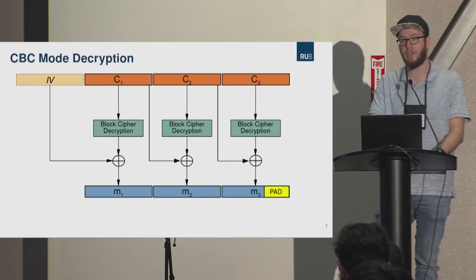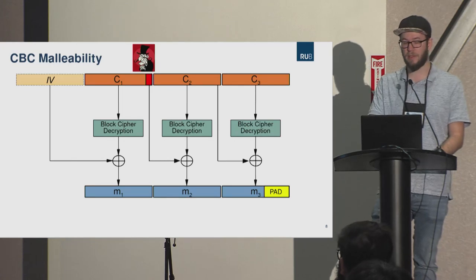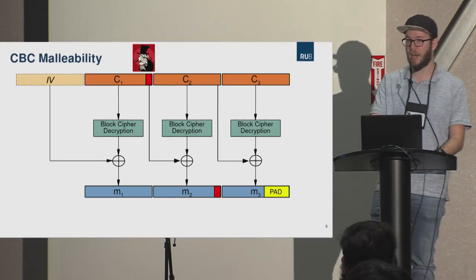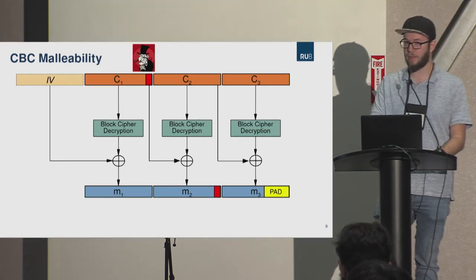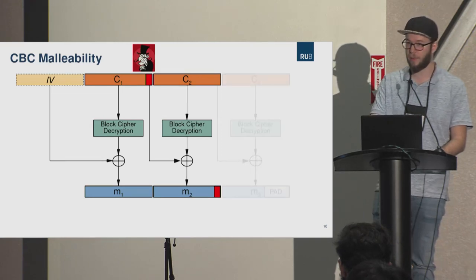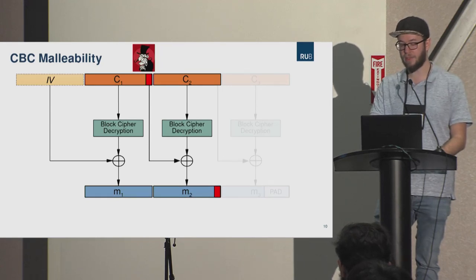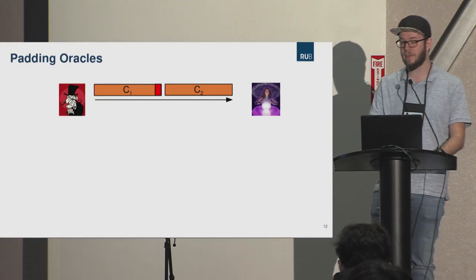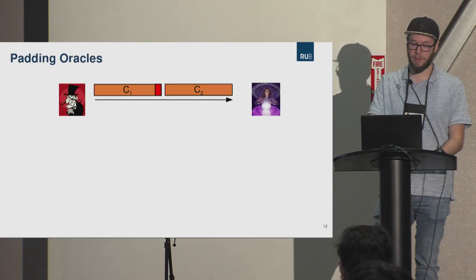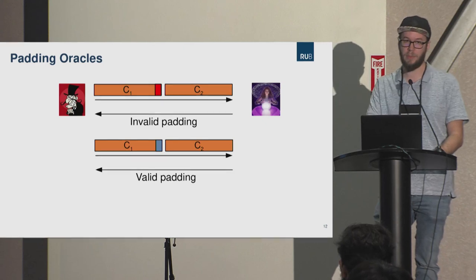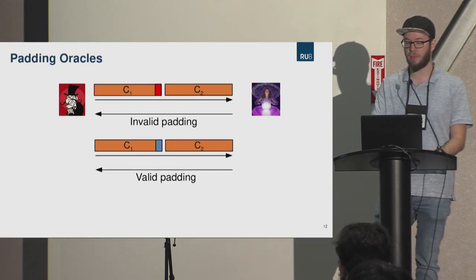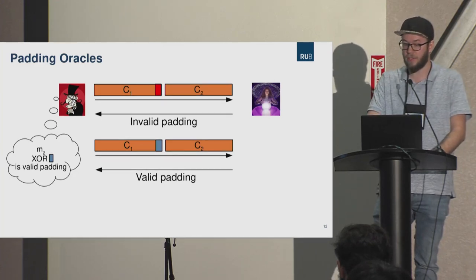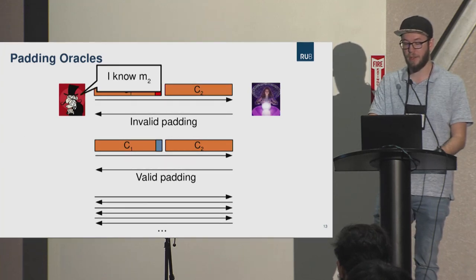The CBC mode has an interesting property: it's malleable. If an attacker flips a bit in the ciphertext, he will also flip the corresponding bit in the plaintext of the next block, allowing arbitrary bit flips in the plaintext. An attacker can cut off the last part of the ciphertext, and the receiving server will interpret the message as padding. In a padding oracle attack, if a server responds differently to valid versus invalid messages, an attacker can deduce plaintext information — specifically that M2 XOR'd with the attacker's modification is valid padding — and by continuing to send malformed messages, can decrypt the whole message.